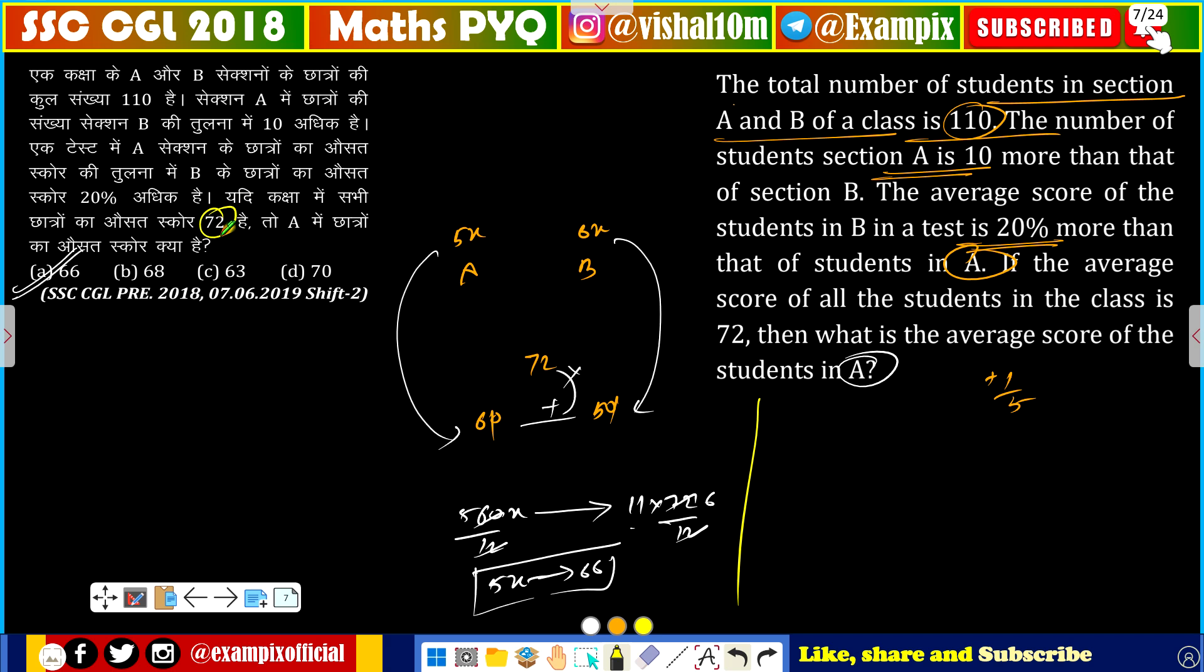Total average number of students sum. How many in section A? Section A average score and how many students have sum into 60 here, and how many students have 50 into 50? How many? 300 or 300 x equals to 110 into 72. We get 5x value here.